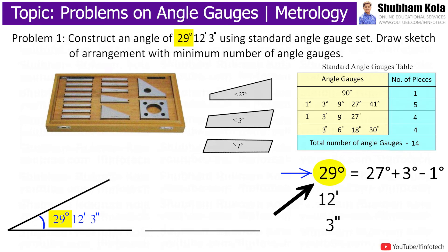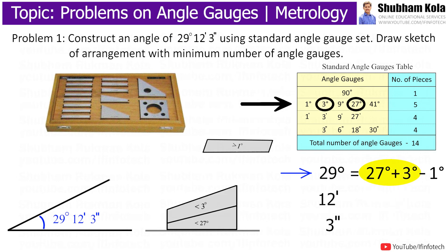To build an angle of 29 degrees, I will add 27 degrees and 3 degrees angle gauges from the standard angle gauge set. This gives 30 degrees, which is more than 29 degrees, so I will subtract 1 degree.